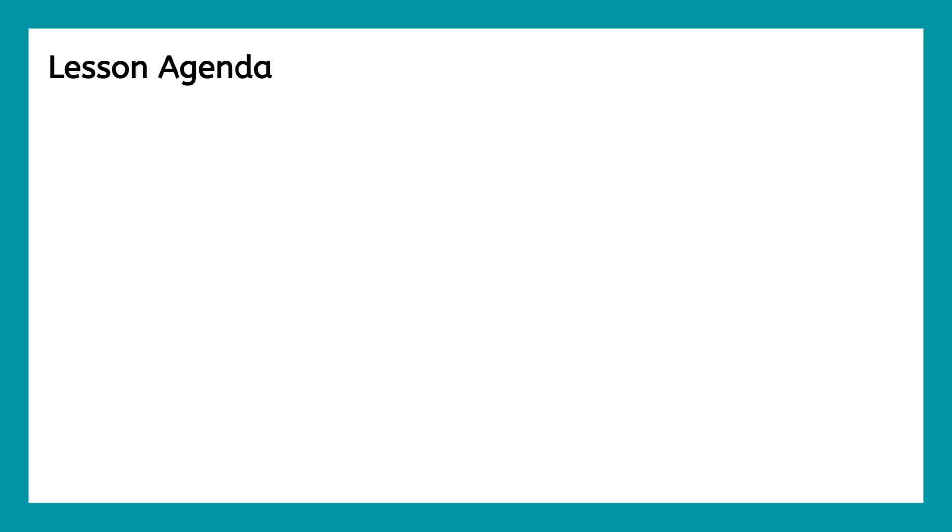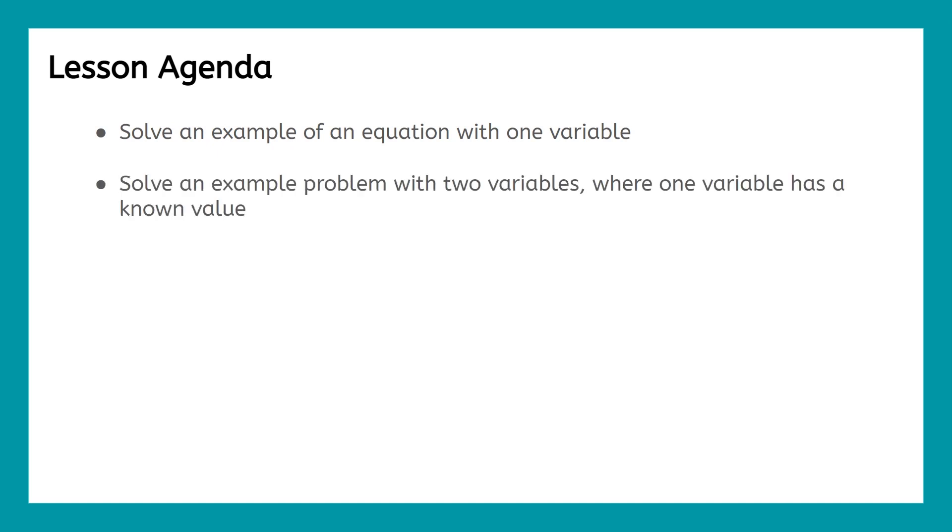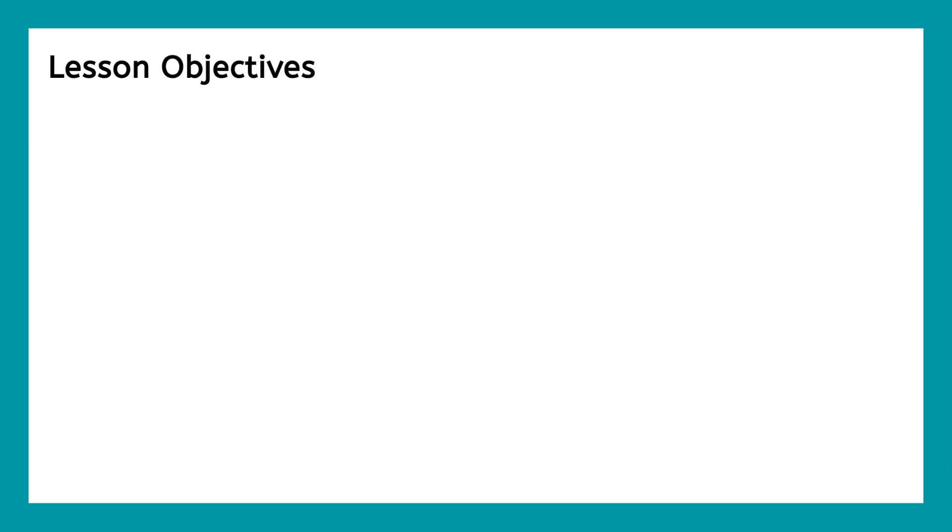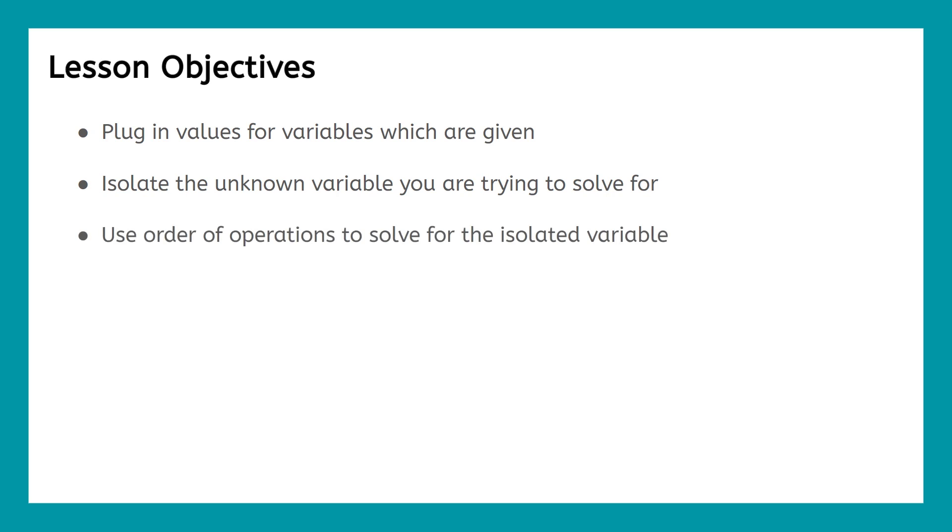Let's begin by reviewing our lesson agenda. First, we'll solve an example of an equation with one variable. Then we'll solve an example problem with two variables where one variable has a known value. Then we'll build even further and solve an example problem with multiple variables where all but one variable has a known value. By the end of this lesson, you'll be able to plug in values for variables which are given, isolate the unknown variable you are trying to solve for, and use order of operations to solve for that isolated variable.